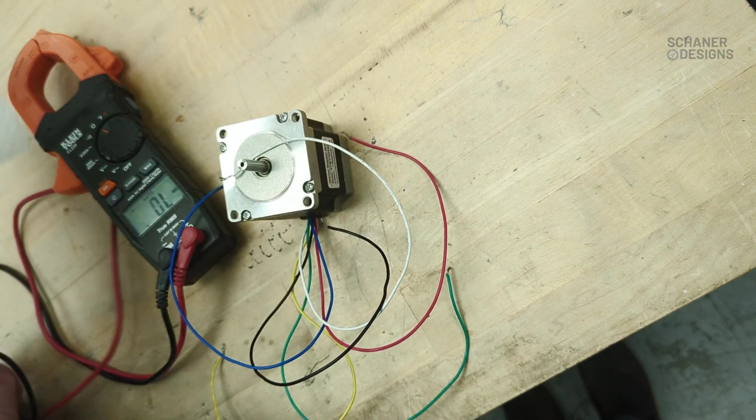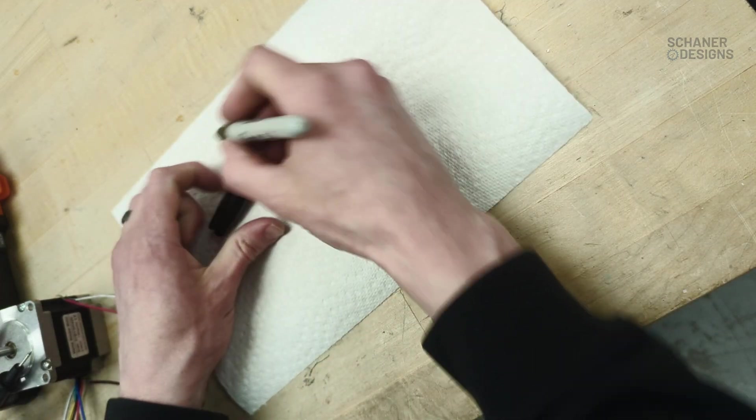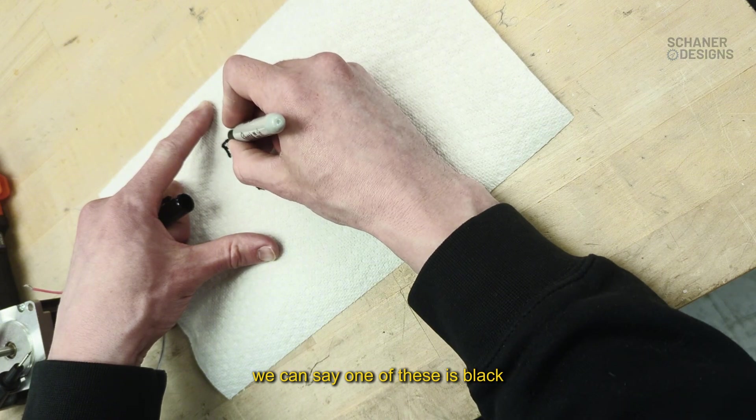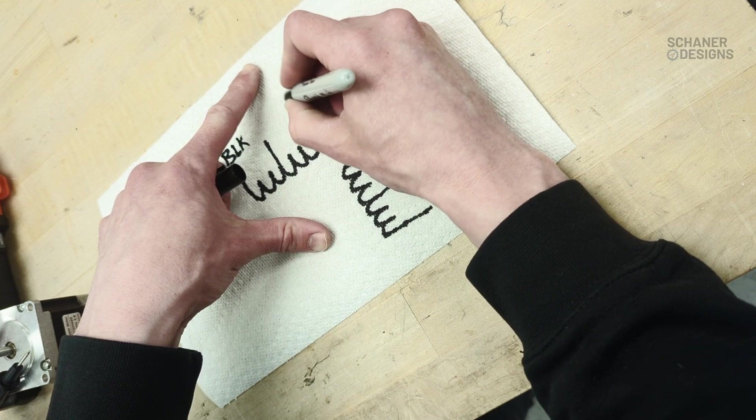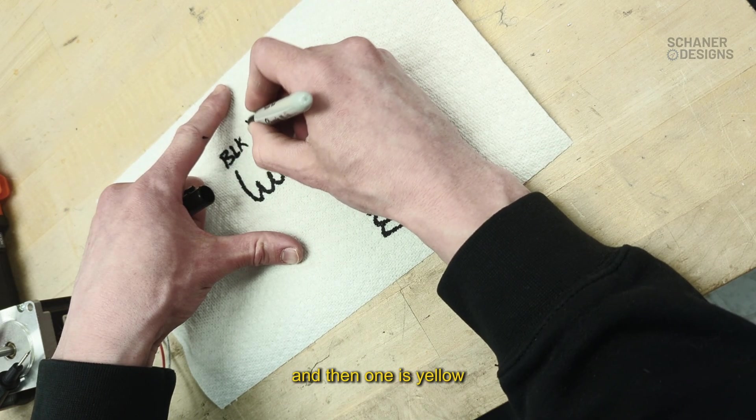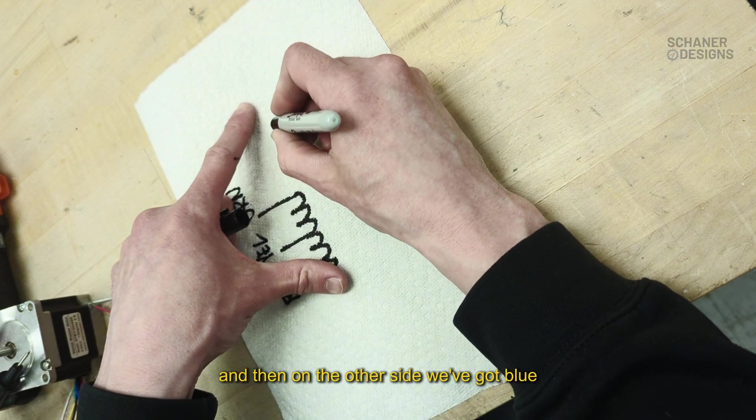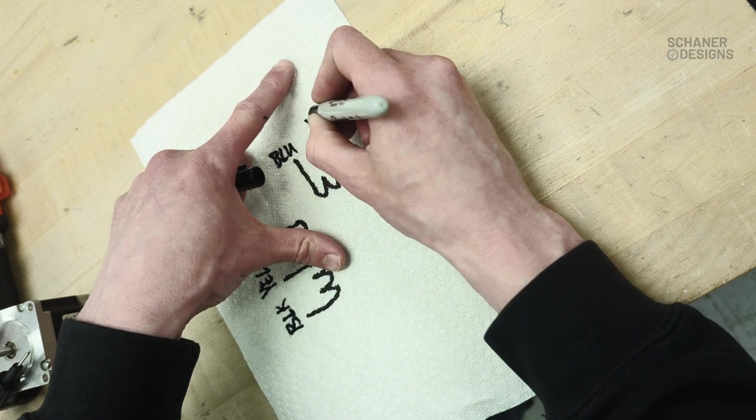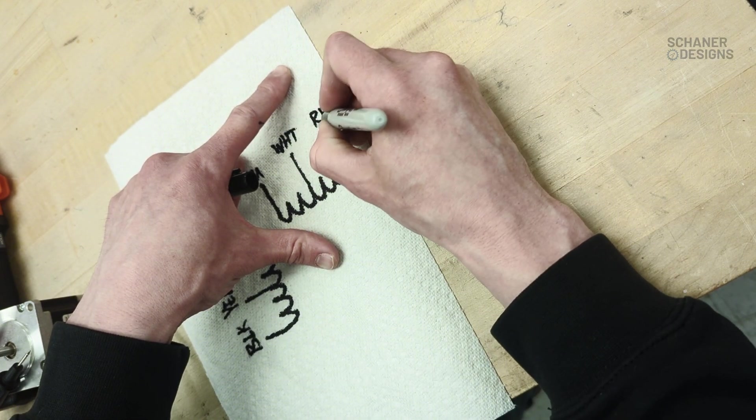We're going to draw this all out. We can say one of these is black, one of these is green, and then one is yellow. And then on the other side we've got blue, white for the center tap, and red.